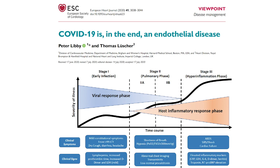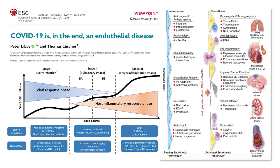Hello, this is Tom Lüscher in Inside Cardiology. It's again COVID, but this time it's something new — after COVID is before COVID, and so we have to understand the disease better. As you can see in this slide, COVID is actually a generalized endothelial disease. First of all, you have an infection, a virus like a cold that is harmless, and then your body reacts to it. This inflammation — the overreaction of the body to the virus — is really what kills you.